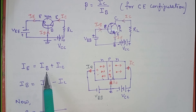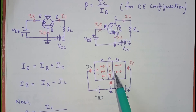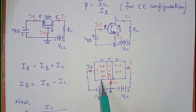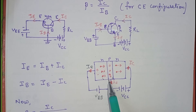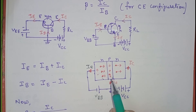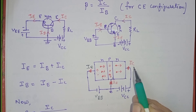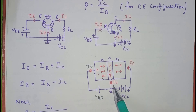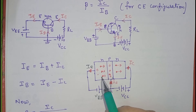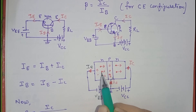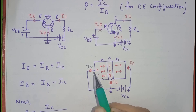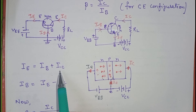We know IE equals IB plus IC. This is because in a transistor, majority charge carriers from the emitter region reach the collector region. When they cross the emitter junction, they reach the base region, where they combine with some of the holes and constitute the base current. When they reach the collector region after crossing the collector junction, they are swept by the positive terminal of VCC, constituting IC. Since IB and IC both arise from electron movement in the emitter, IE is the summation of IB and IC.